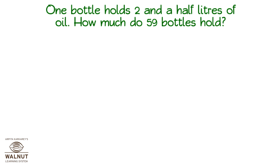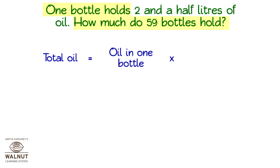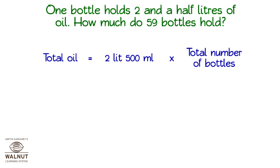One bottle holds 2.5 litres of oil. How much do 59 bottles hold? What do we have to find out? The total oil in all the bottles together. What do we know? The oil in one bottle. We know the oil in one bottle and we have to find out the oil in many. This is obviously a multiplication problem. So, the total oil is the oil in one bottle multiplied by the number of bottles. The oil in one bottle is 2.5 litres, which is 2 litres 500 millilitres.